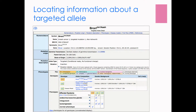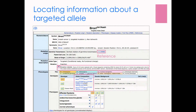Clicking on the allele symbol will bring you to a targeted allele detail page, which contains a bunch of information including the reference that originally described the mutation, the mutation details including which exon or exons were floxed, and various other targeting characteristics. In the allelic composition section, you can see that the homozygote, where it's just the insertion of the recombinase recognition sites, has a normal phenotype as expected.